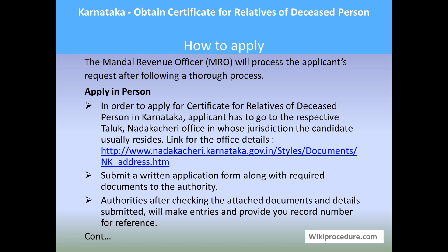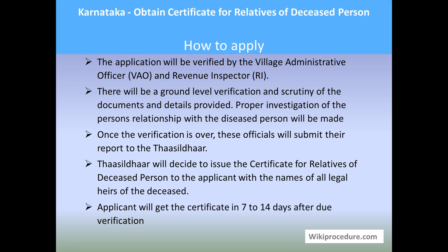Don't worry if you don't know the format in which you need to write — there will be an officer at the counter to support you in writing the required information. The officer will inform you the details you need to provide in the letter. After checking the attached documents and details submitted, authorities will make entries and provide you a record number for reference. The application will then be verified by the Village Administrative Officer or Revenue Inspector, with ground-level verification and scrutiny of the documents and details provided.